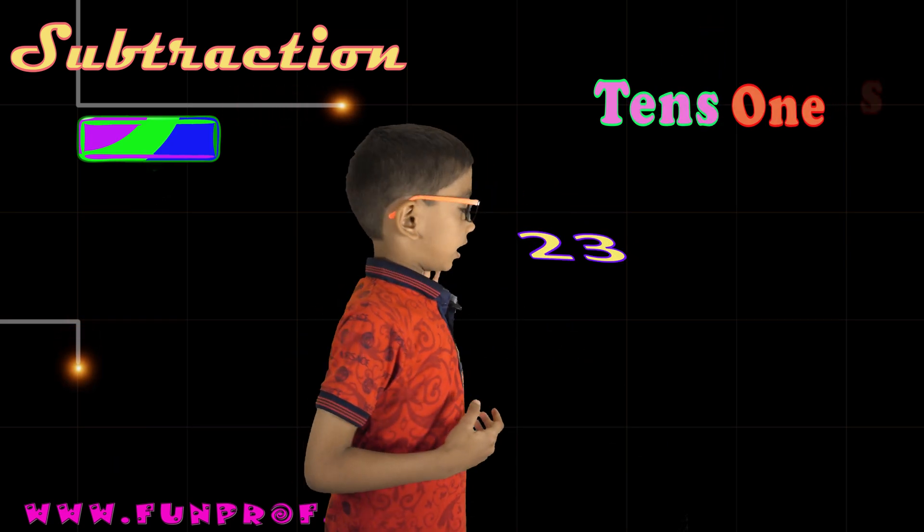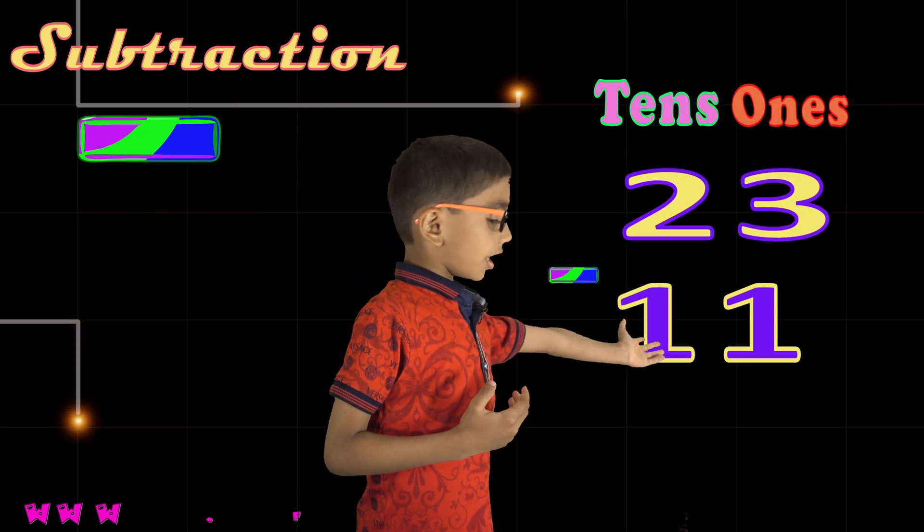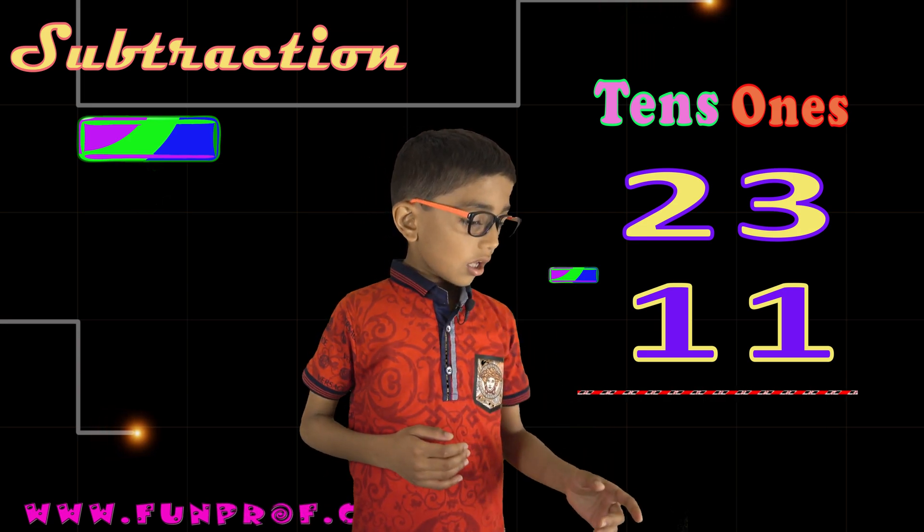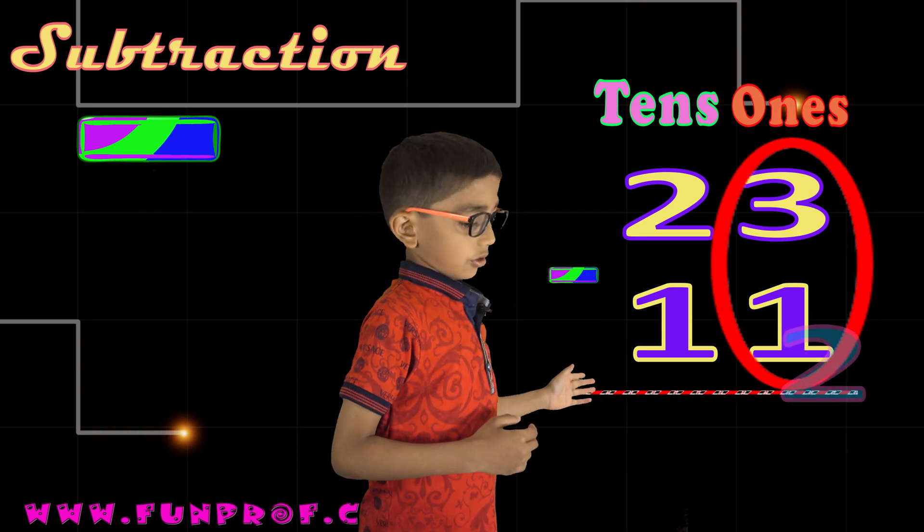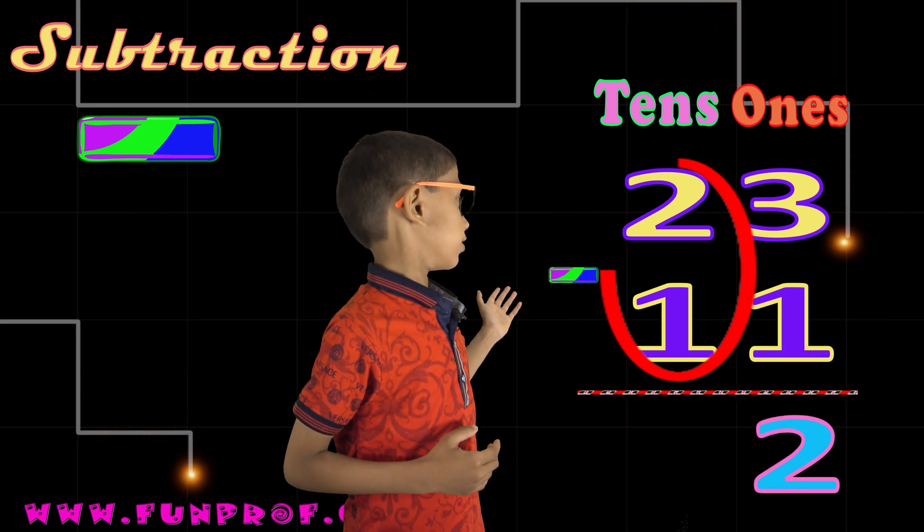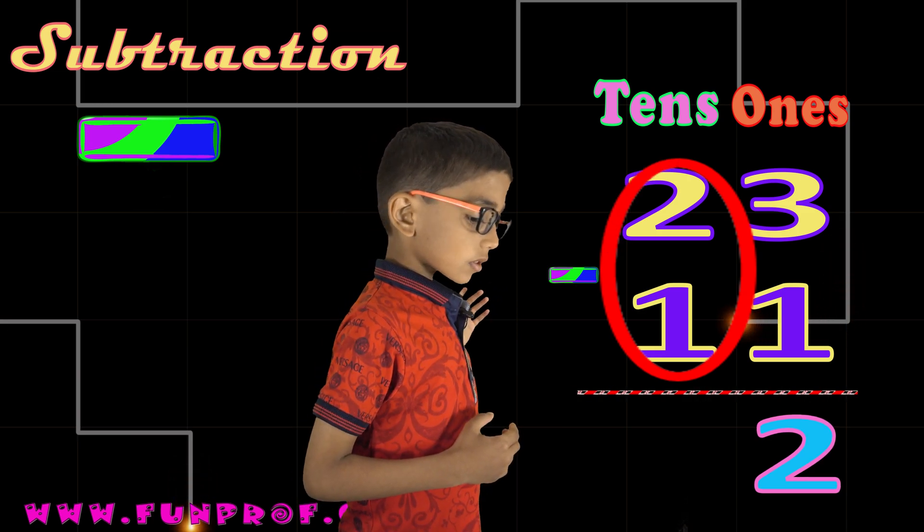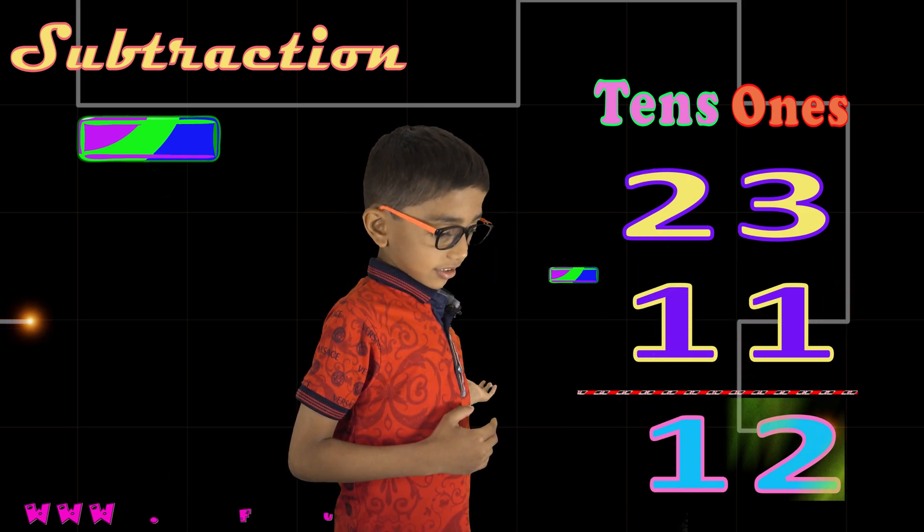Now we will do subtraction. 23 minus 11. 3 minus 1 is equal to 2, and 2 minus 1 is equal to 1. The answer is 12.